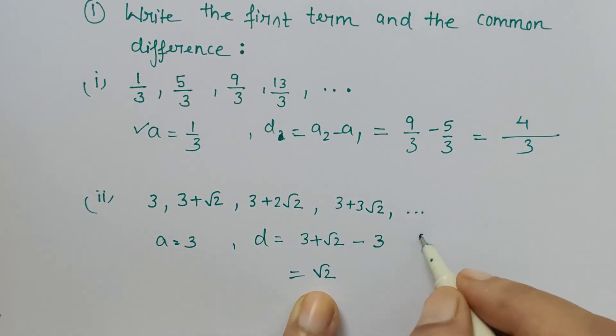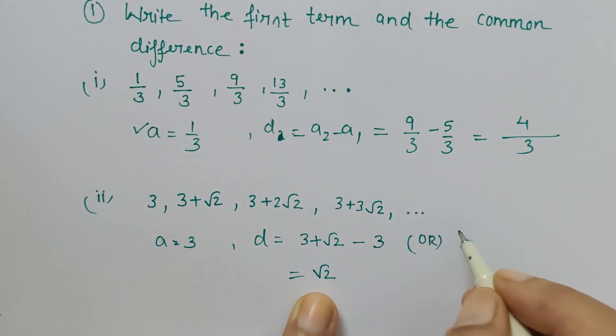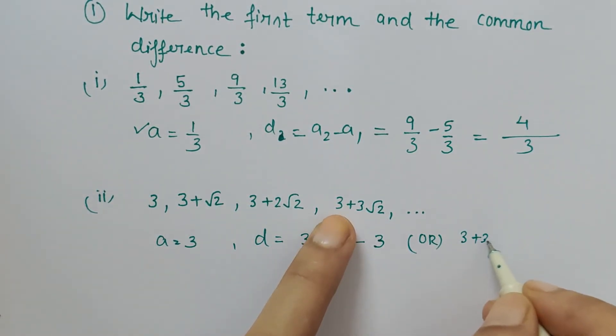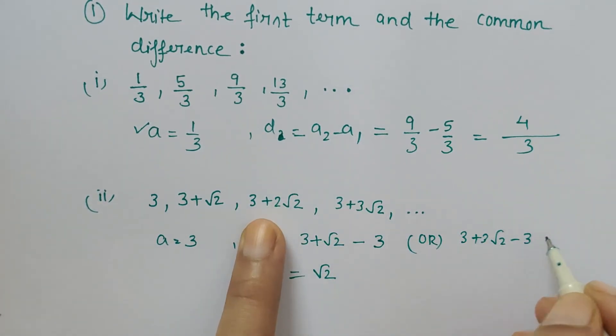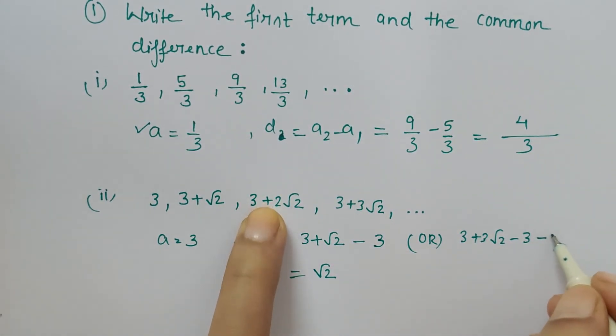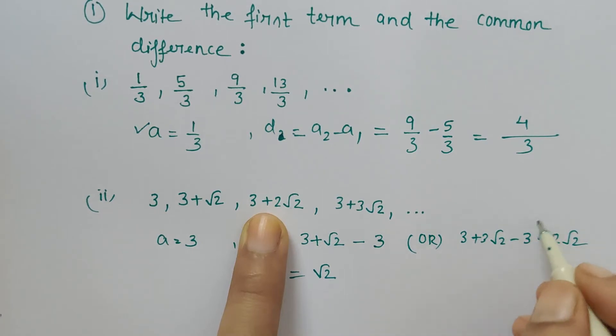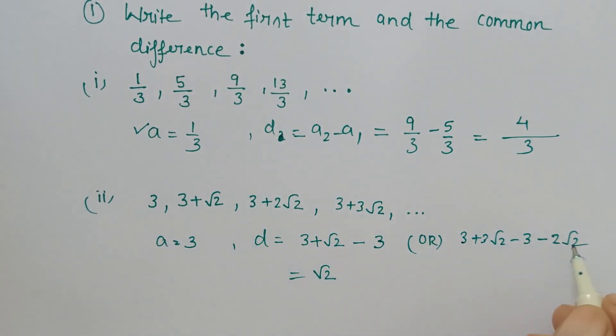Like 3 + 3√2 minus (3 + 2√2). This will also become minus because that's a common term, so 3 minus 3 is 0. Now 3√2 minus 2√2 - these are like terms, right? So when 2 is subtracted from 3, only 1 is left, so √2 gets attached.